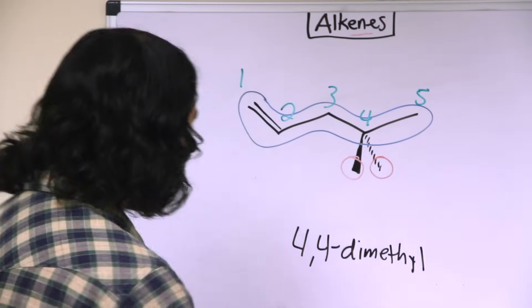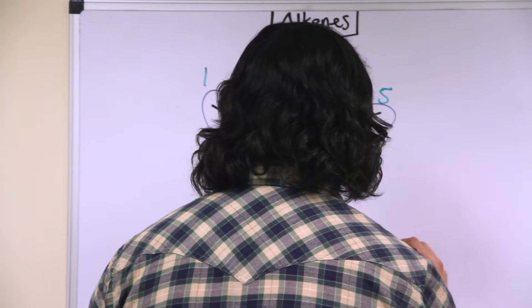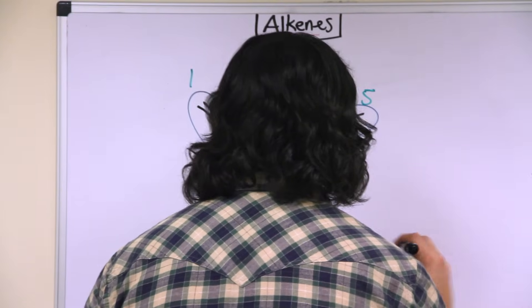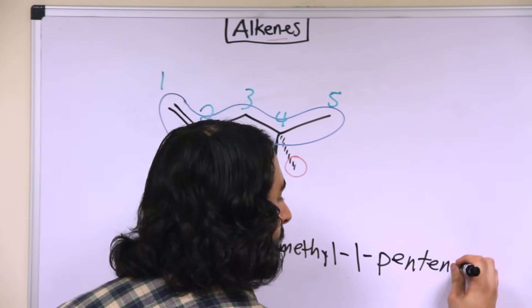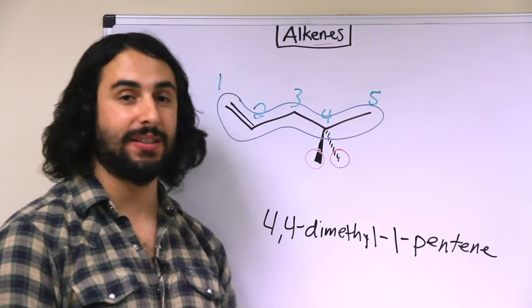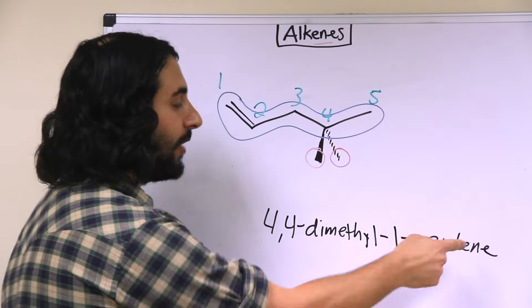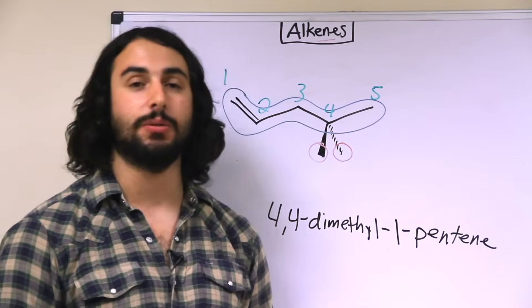So 4,4-dimethyl, and then we have to list the location of the double bond. It begins at carbon-1, so this is 1-pentene, so 4,4-dimethyl-1-pentene. We do need to list where the double bond occurs in the molecule so as to remove ambiguity as to its location.